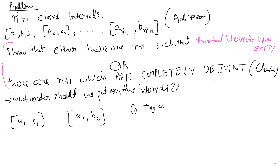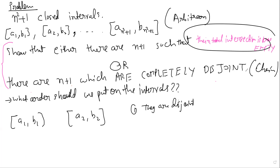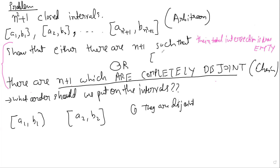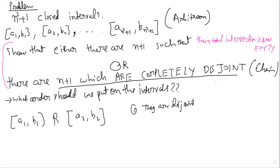Now we draw or conceptualize the resulting poset. Let's take an example and actually draw it. Take intervals like [−1, 1], [1, 2], [3/2, 5], and maybe [2, 4]. What are the minimal elements of the poset? A minimal element is one that nothing is less than. So [−1, 1] is minimal — to be less than it, something would have to start before −1 and end before −1, but there's nothing like that here.